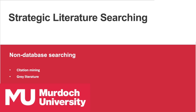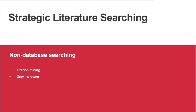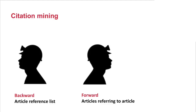In this video we're going to look at some non-database searching options including citation mining and grey literature. Citation mining is a term used to describe the process of looking forward and backward with reference to a particular publication or article. So if you find that there is an article that is particularly useful to your research, it's a good idea to look backward in terms of looking at the references that that author used to create the article to see where they got their information from. That may give you a list of references that are also potentially useful for your research.